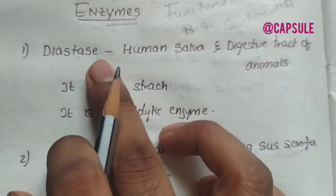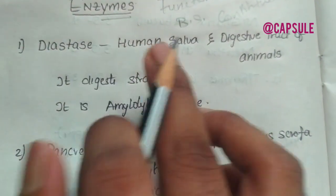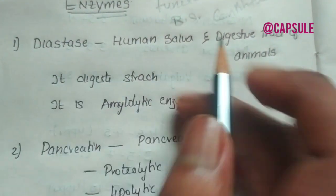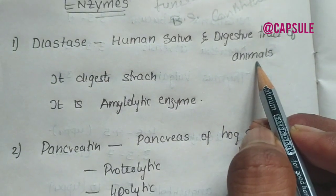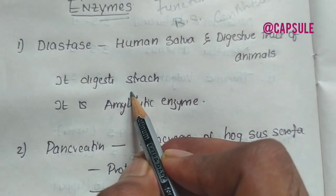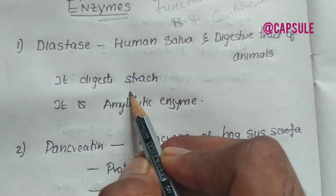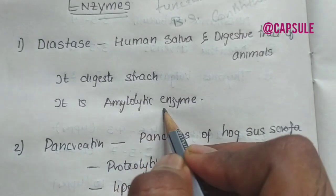Coming to the first enzyme, diastase. It is present in human saliva and the digestive tract of animals. Its main function is the digestion of starch and it is an amylolytic enzyme.